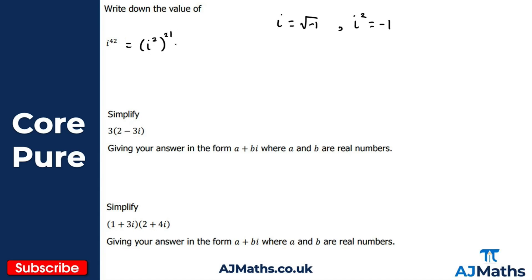So what do we multiply two by to get 42? That's simply 21. We get i squared to the power of 21, and since i squared is minus one, we have minus one to the power of 21. Because we have a negative base raised to an odd power, the result is minus one. If it were an even power, it would be positive one. So using rules of indices we avoid computing all 42 steps.